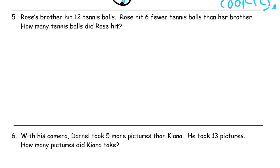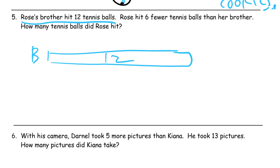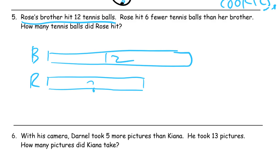Rose's brother hit 12 tennis balls. Rose hit six fewer tennis balls than her brother. How many tennis balls did Rose hit? So I'm just going to draw what it says: Rose's brother, B — he doesn't have a name in this story, so I'll call him B for brother — and I know he hit 12 tennis balls. Rose hit six fewer tennis balls than her brother, so Rose hit fewer, meaning Rose's tape is going to be shorter. The question is how many did Rose hit — we don't know.